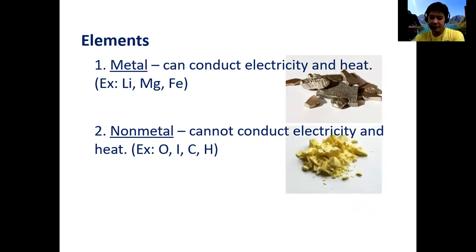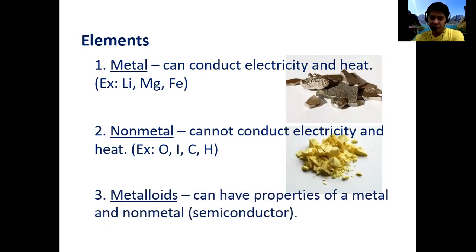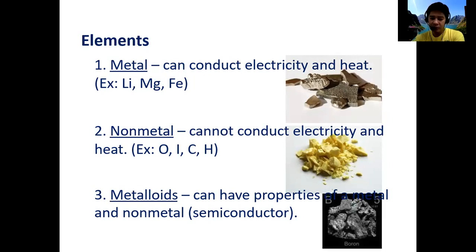Sulfur is an example of a yellow solid non-metal substance. For metalloids, they are elements that can have properties of both a metal and a non-metal. They are also known as semiconductors — they can be processed to exhibit metallic or non-metallic properties. Boron is an example of a metalloid.